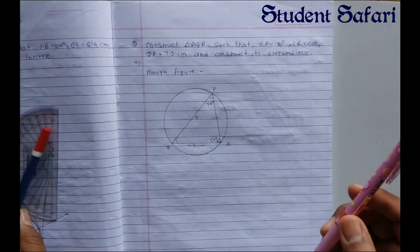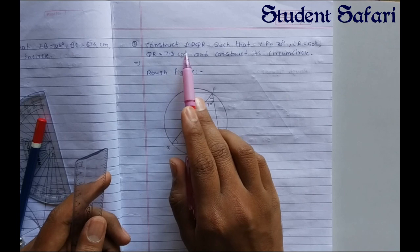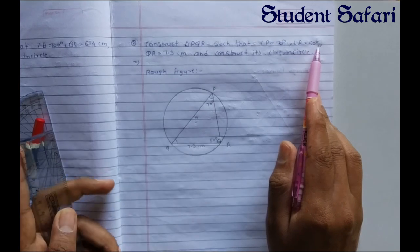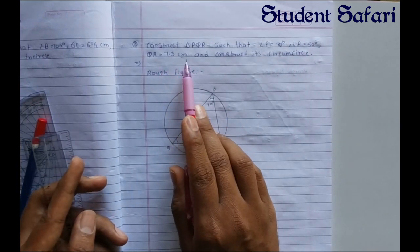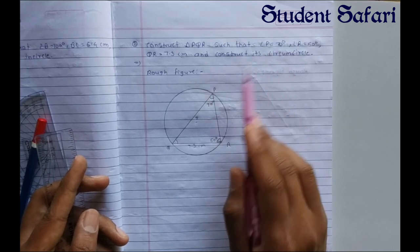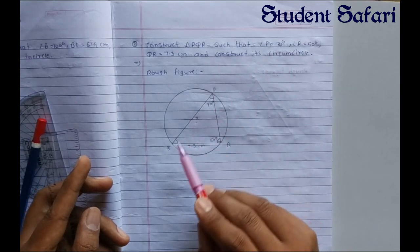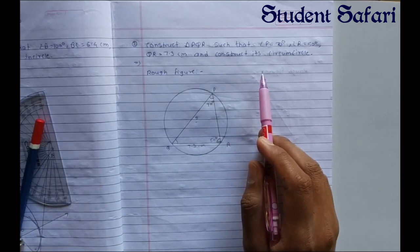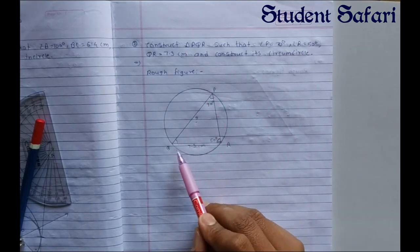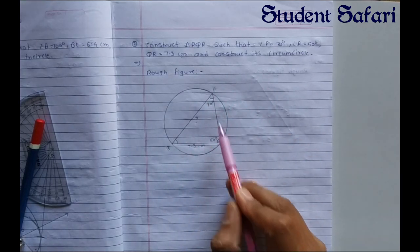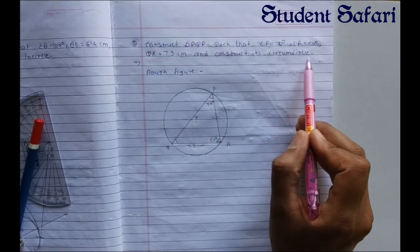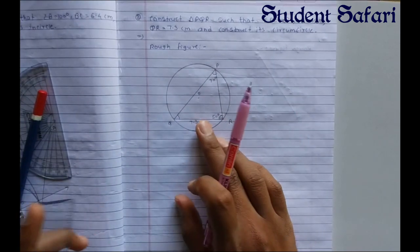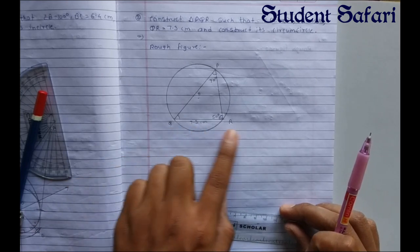The second problem: construct triangle PQR such that angle P is equal to 70 degrees, angle R is equal to 50 degrees, QR is equal to 7.3 centimeters, and construct its circumcircle. We draw triangle PQR as before, then draw the circumcircle. For the circumcircle we bisect two segments of the triangle — unlike the incircle where we bisect two angles.